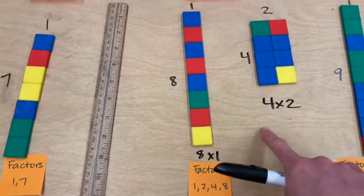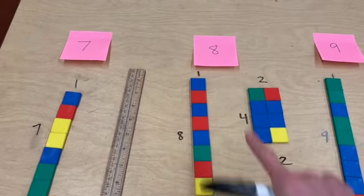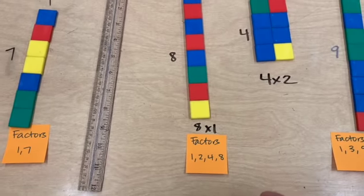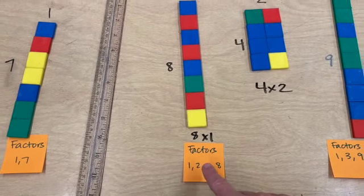So 8 times 1 and 4 times 2 both get us to the number 8. So 8's factors are 1, 2, 4, and 8.